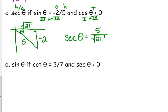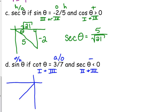Let's find the sine if we're told the cotangent and the secant. Sine is opposite over hypotenuse. Cotangent is adjacent over opposite — it's the reciprocal of tangent. Cotangent is positive where tangent is positive: first and third quadrant. Secant is less than zero — it is negative. Secant is the reciprocal of cosine; cosine is positive in the first and fourth, so it's negative in the second and third. Those overlap in the third quadrant, so we are in the third quadrant.